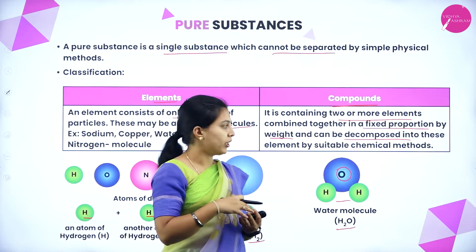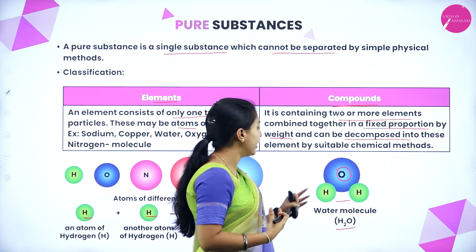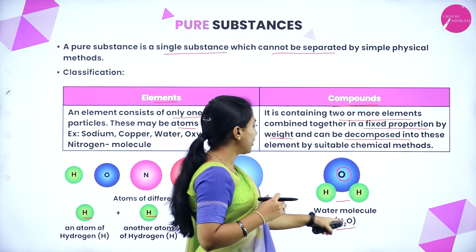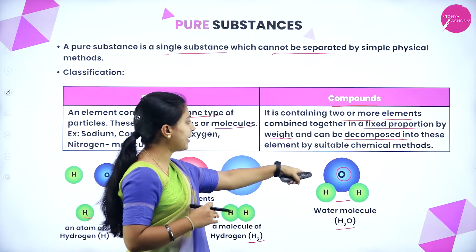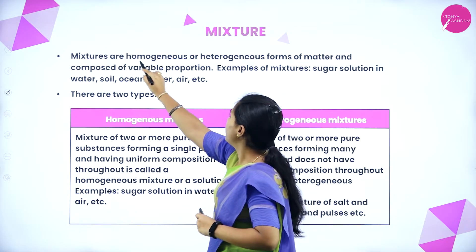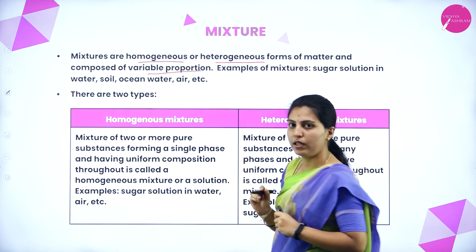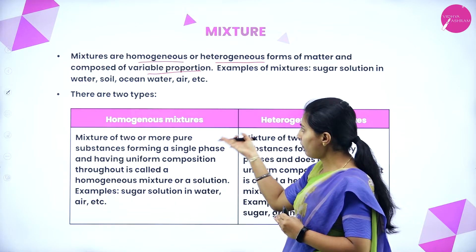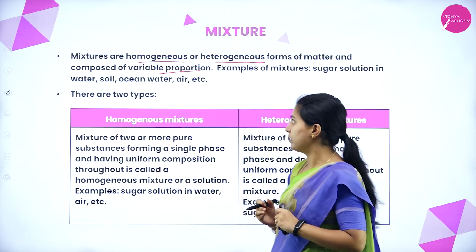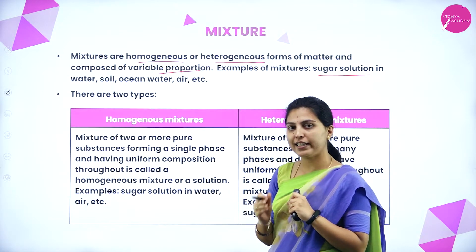In a compound, different kinds of elements form in a fixed proportion and can be decomposed. For example, in water — two atoms of hydrogen (fixed) and one atom of oxygen form a water molecule. If we decompose it, it separates into different elements. Mixtures are homogeneous or heterogeneous forms of matter composed of variable proportions. Examples of mixtures include sugar solution in water, soil, ocean water, and air.